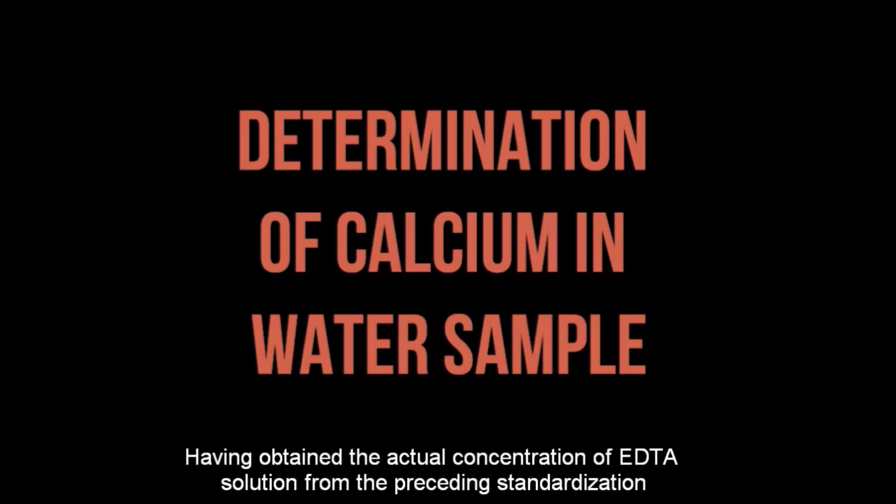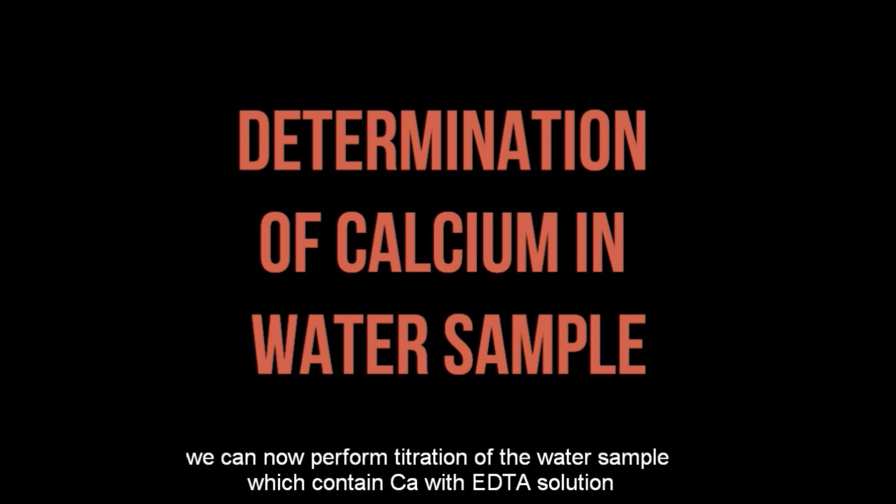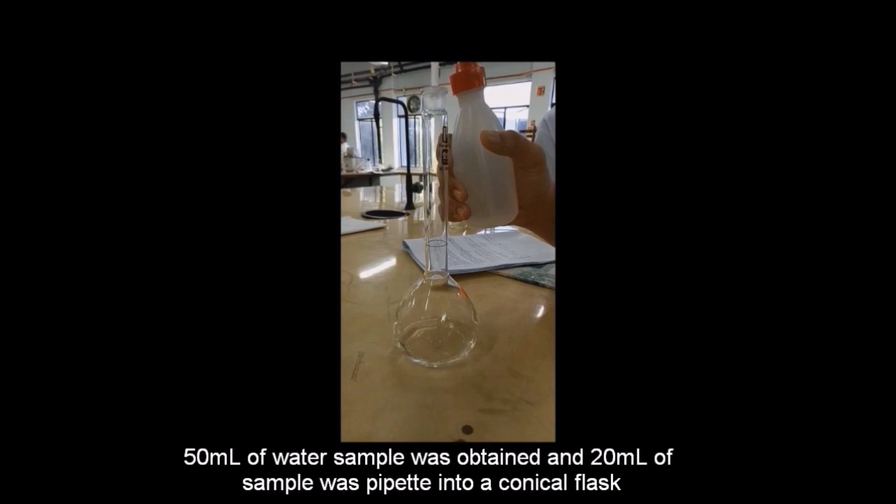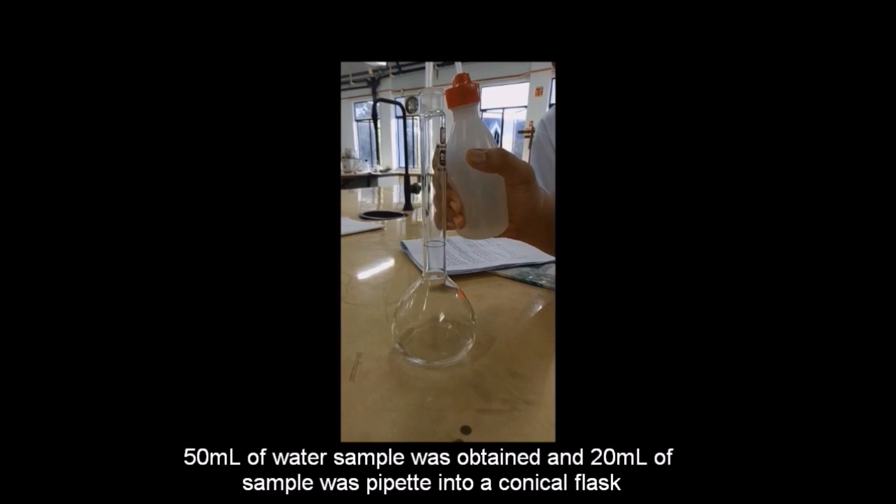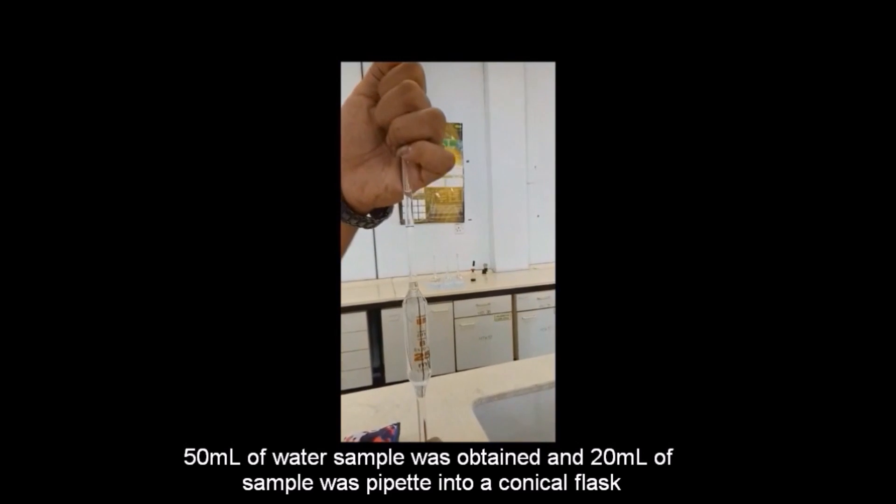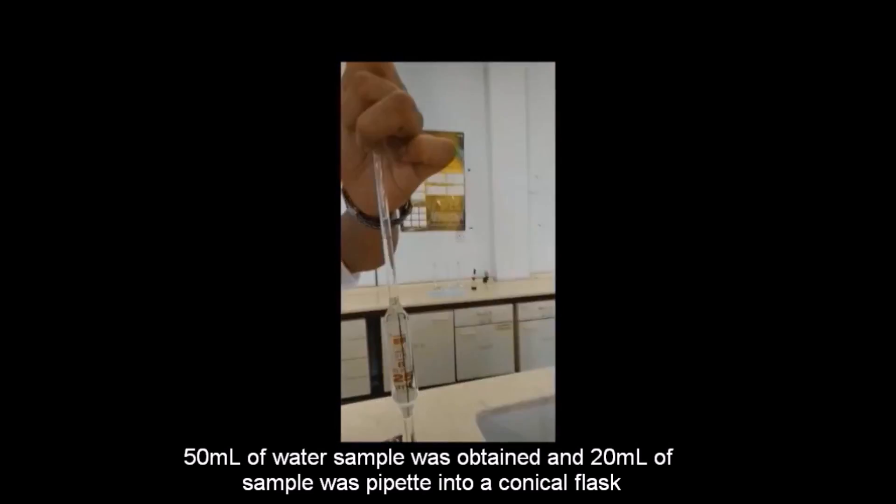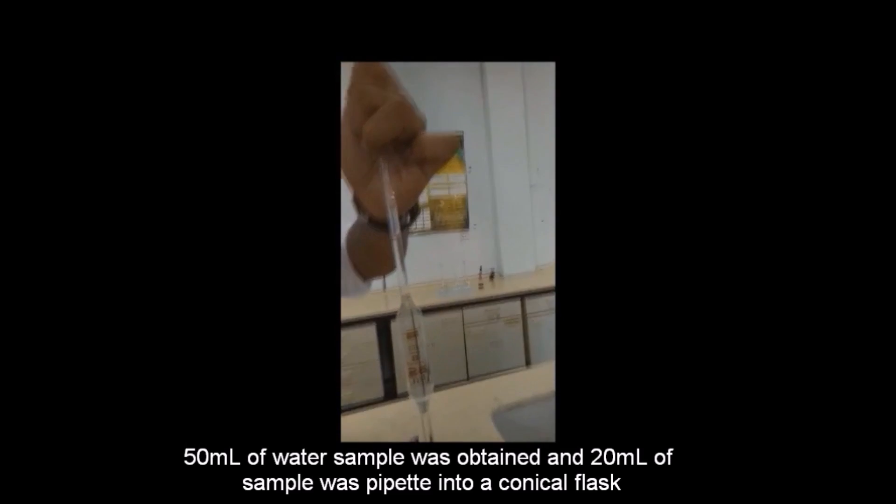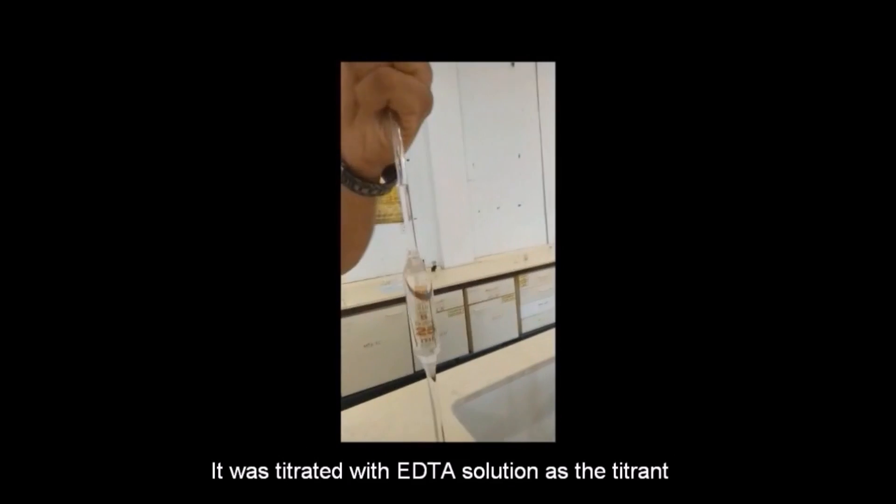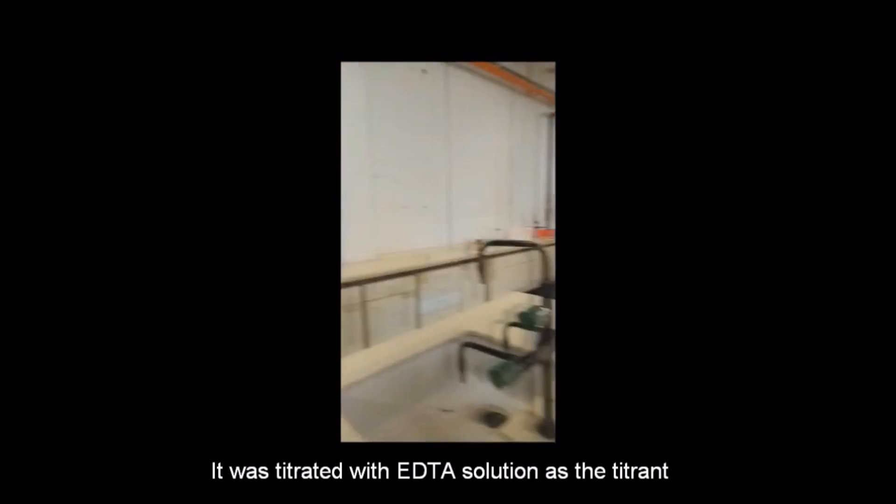Having obtained the actual concentration of EDTA solution from the preceding standardization, we can now perform titration of the water sample which contained calcium with EDTA solution. 50 ml of water sample was obtained and 20 ml of sample was pipetted into a conical flask. It was titrated with EDTA solution as the titrant.